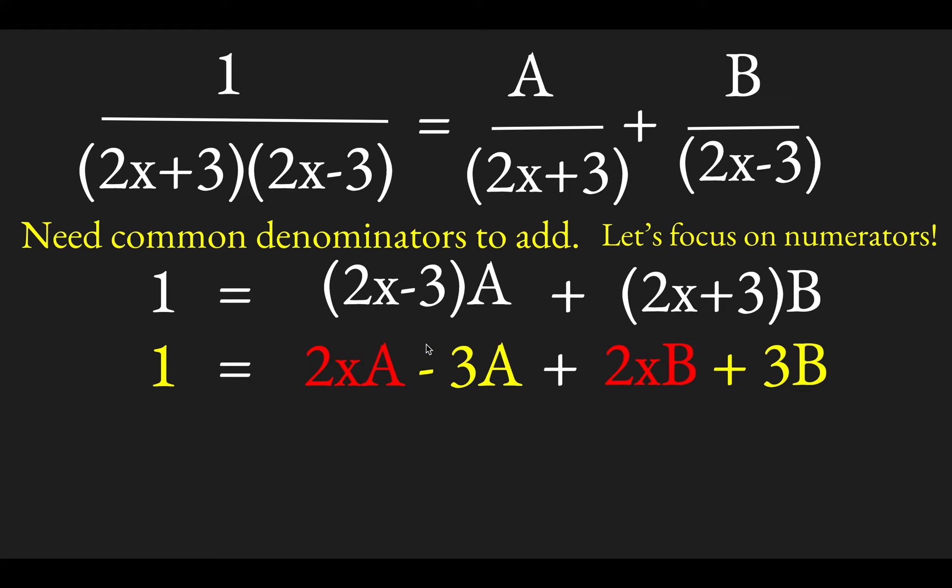And then these terms in red here are coefficients of, or terms that are to the order x. Well, there's no term to the order x on the left side. So the red terms must conspire to be 0, and the yellow terms must conspire to be 1. So we kind of get two equations for our two unknowns, a and b.